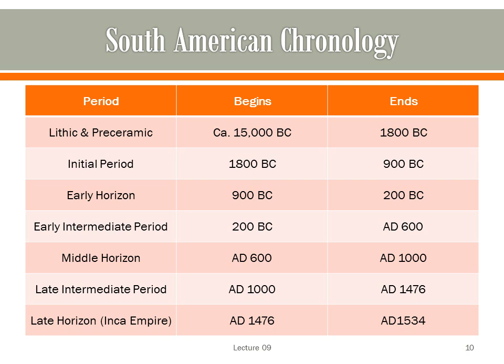As comparatively little archaeological work has been done in South America, the cultural chronology there is less well known than elsewhere in the New World. The major cultural periods are: the lithic and pre-ceramic period beginning around 15,000 BC to 1800 BC; the initial period from 1800 to 900 BC; the early horizon from 900 BC to 200 BC; the early intermediate period from 200 BC to AD 600; the middle horizon from AD 600 to AD 1000; the late intermediate period from AD 1000 to 1476; and the late horizon, also called the Inca Empire, from 1476 to 1534 when Spanish conquistadors arrived.